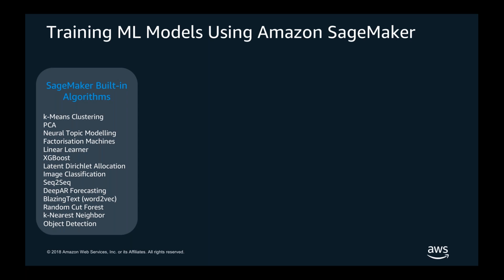BlazingText allows you to embed words into numbers — an important step for machine learning. Random Cut Forest allows you to do anomaly detection, identifying outliers inside a dataset. K-nearest neighbor identifies similarities between items — classifying items as similar products or similar types of people. And Object Detection, using single-shot detection, allows you to count or identify individual items inside an image, giving you better detail than even just image classification.